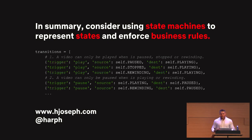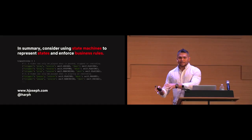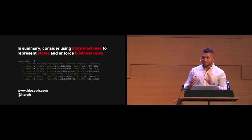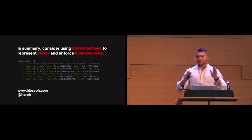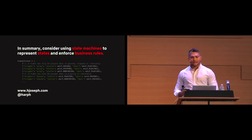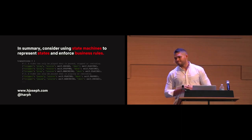In summary, consider using state machines to represent states and enforce business rules. When we use booleans, the code gets messy, unmaintainable, prone to errors, and really hard to test — just like the closet analogy. With state machines, we delegate that complexity and also reduce the amount of unit tests we have to write. It is important to mention that state machines are not a silver bullet — it's not a one-size-fits-all solution. Know your tools, think about the problem you're trying to solve, decide if it makes sense to add a state machine, and balance your decisions. Thank you very much.